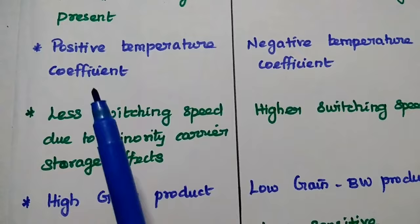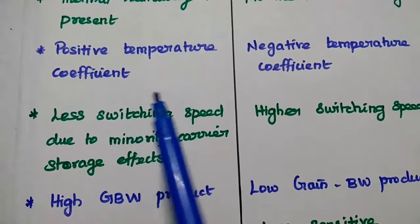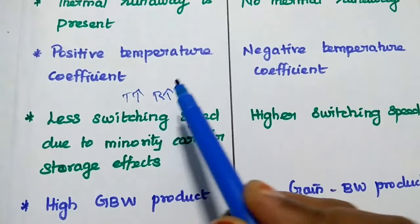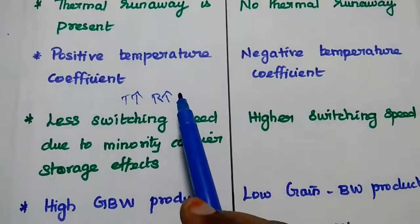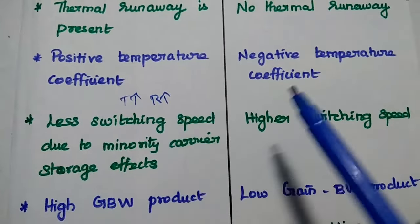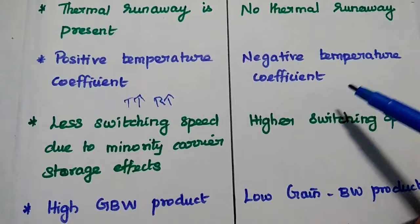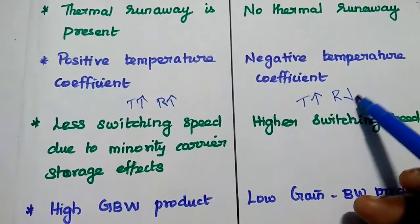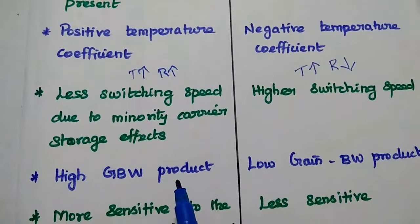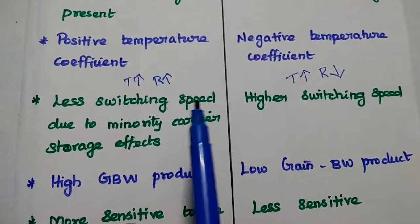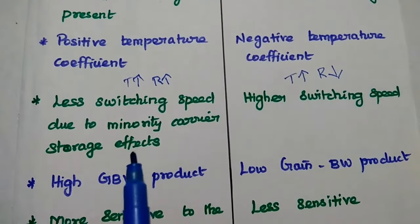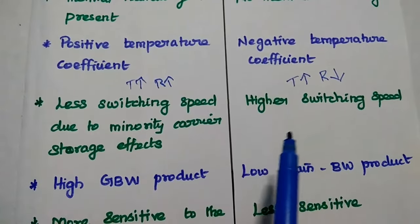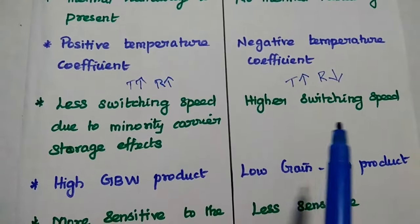In BJT, it has a positive temperature coefficient — meaning if temperature increases, the resistance value also increases, and therefore the current value increases. In FET, it has a negative temperature coefficient — meaning if temperature increases, the resistance value decreases. BJT has less switching speed due to the minority carrier storage effects. In FET, there are no minority carrier storage effects, which is why it has a higher switching speed.